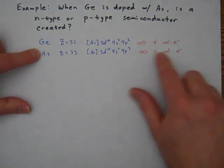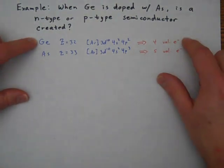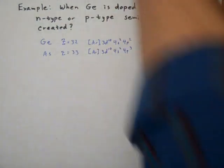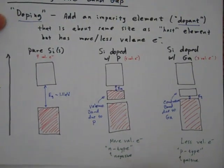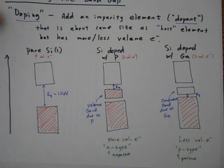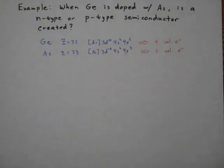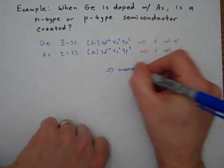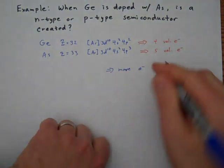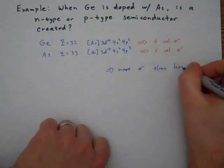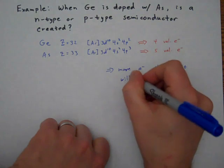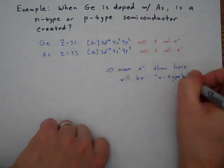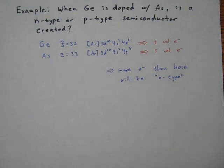So in this case, we have one more electron in our dopant than we do in our host semiconducting material. So we will remember from our picture that when you have more valence electrons, remember electrons are negative, so we're going to think negative. So this is going to be an N-type semiconductor. So there's our answer. Because we have more electrons than host, this is going to be an N-type semiconductor. And so that's how we work problems like that.